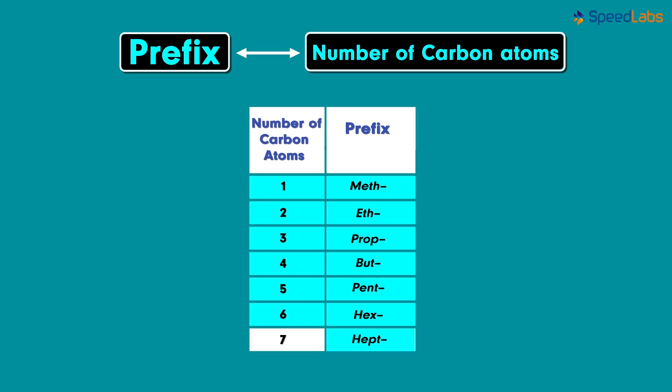The prefix 'hept' represents compounds with seven carbon atoms. Beyond this, there are prefixes for increasing carbon numbers, but we will look at those in content for higher grades.